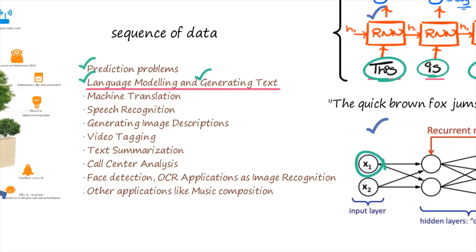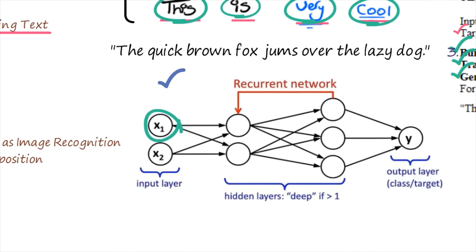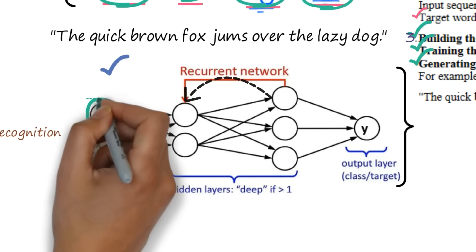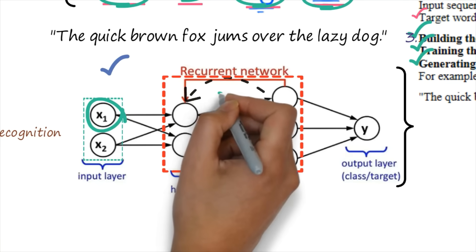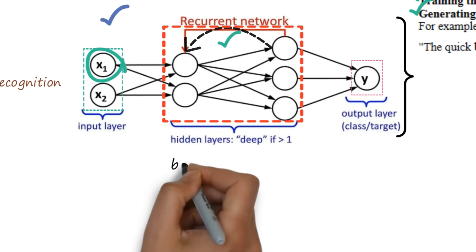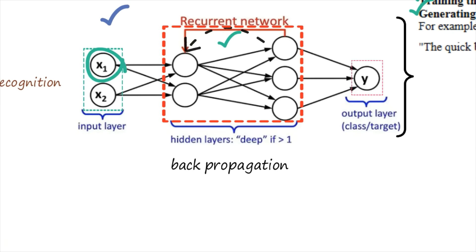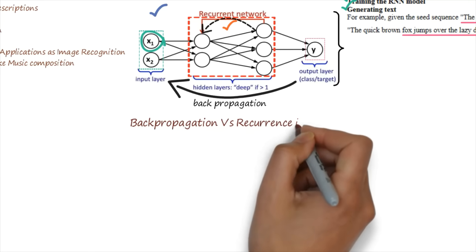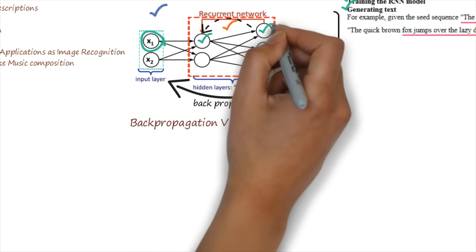There is one interesting topic to discuss. Whenever I am talking about recurrent neural network, the network will look like this, and you will find there is a feedback loop between the hidden layers. This is the input layer, this is the hidden layer with a feedback loop, and this is the output layer. But there is one confusion — sometimes people confuse this concept with backpropagation. You have to understand what is the difference between the RNN feedback loop in the hidden layer and backpropagation. These are not the same.